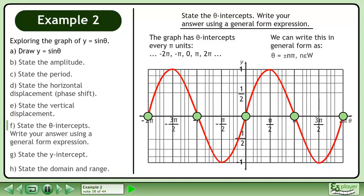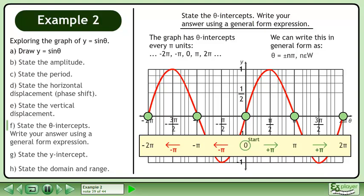We can write this in general form as theta equals positive or negative n pi, where n belongs to the set of whole numbers. This means that if we start at 0 radians, we can add or subtract pi to get the adjacent theta intercepts.